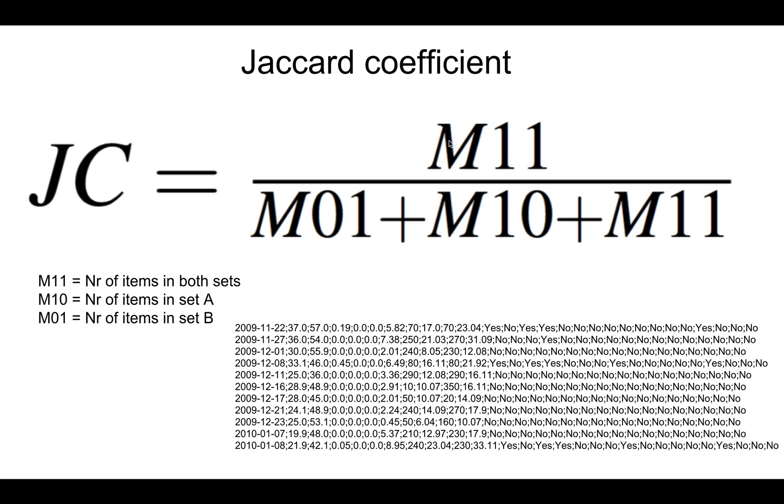So the way we do it is like this. You would take the M11, and the M11 values are the number of items that are in both sets. So in the cases where both of the indexes are yes, like yes yes, that's going to give you a plus into this variable.